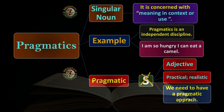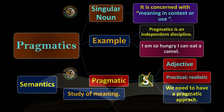Both pragmatics and semantics deal with meaning, but differently. Semantics studies meaning in its literal sense — what is written and the connections between words in a sentence. Pragmatics goes one step beyond, interpreting meaning in the context in which it is used. For example, 'I'm so hungry I can eat a camel': from a semantic viewpoint we see how a person could eat a camel, but pragmatically we interpret that the person is simply very hungry. Thank you and goodbye.